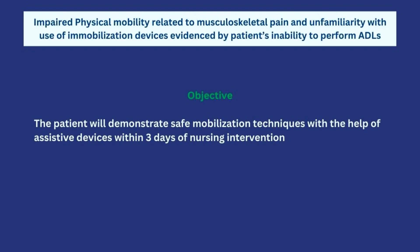The second nursing diagnosis is impaired physical mobility related to musculoskeletal pain and unfamiliarity with the use of immobilization devices, evidenced by patient's inability to perform ADLs. Our objective must be realistic — a fracture of the right femur is serious and bone healing takes time. Therefore, the objective is that the patient will demonstrate safe mobilization techniques with the help of assistive devices within three days of nursing intervention. This is realistic: she will begin demonstrating safe techniques, not moving independently.